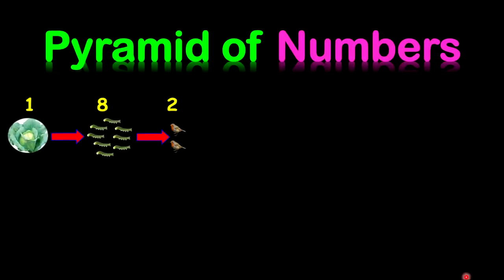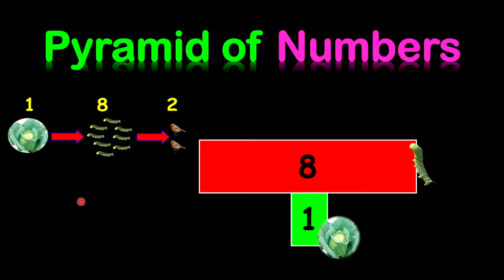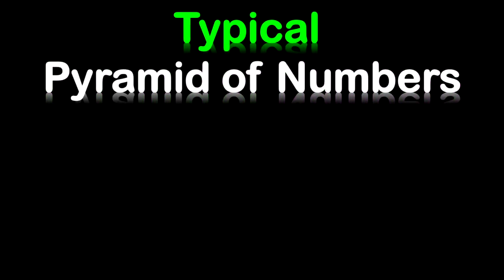Now let's jump into our pyramid of numbers. Remember this sample food chain — we started out with 1, 8, and then 2. Pay special attention here because the numbers are critical. You start with the producer: 1. The herbivore will be 8 for the sample. And then the final organism will be 2. The examiner will provide you with the numbers they want you to work with, and based on those numbers, the shape of the pyramid of numbers might be different.